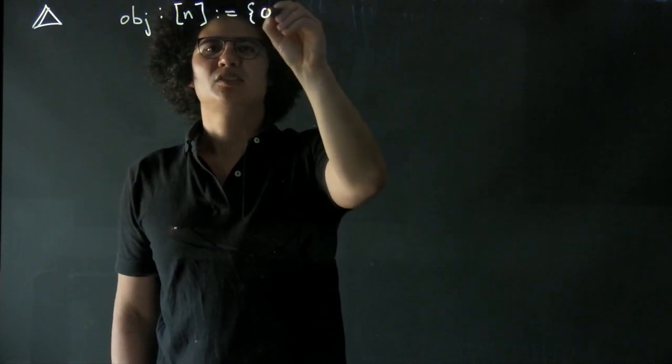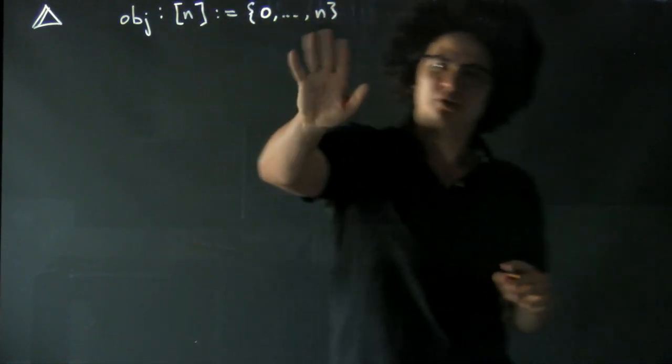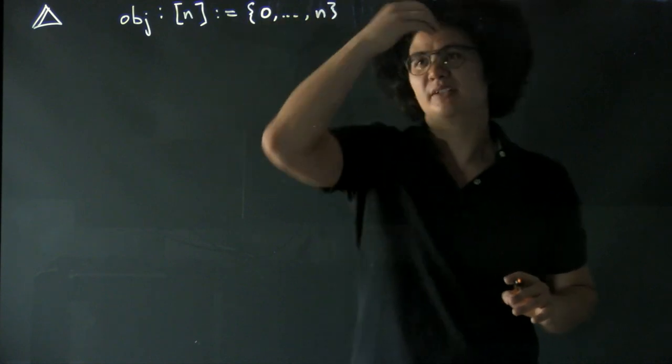So they're sets, zero to n, with the natural total ordering on them. So zero is less than n, zero is less than one, etc.